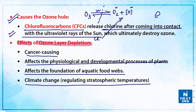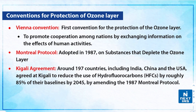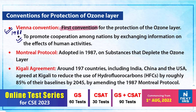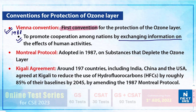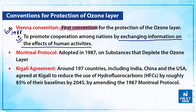Regarding conventions for the protection of the ozone layer: the Vienna Convention was the first such convention. It came into force in 1988 and promoted cooperation among nations by exchanging information on the effects of human activities. It was against the use of propellants and substances used for refrigeration, most commonly CFCs and brominated hydrocarbons. However, this convention was not legally binding.